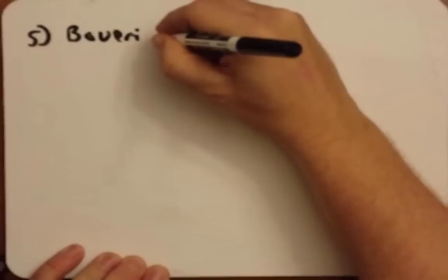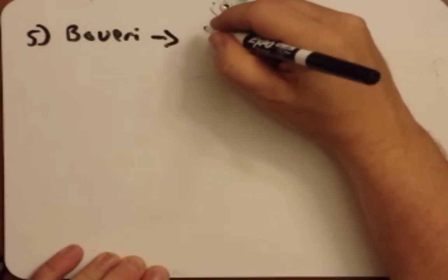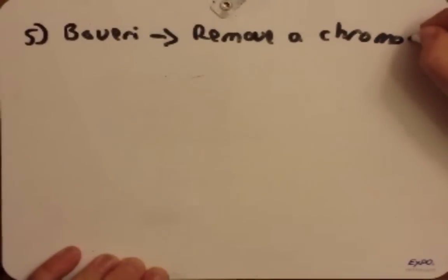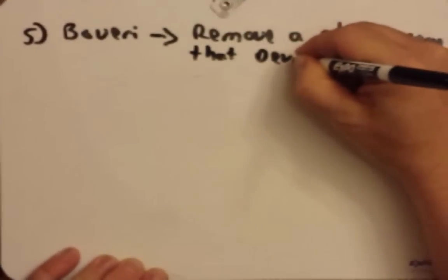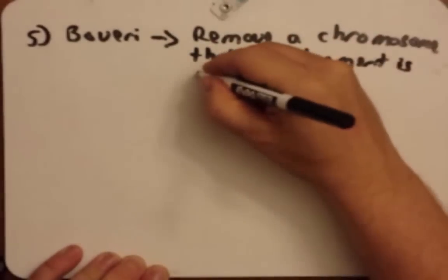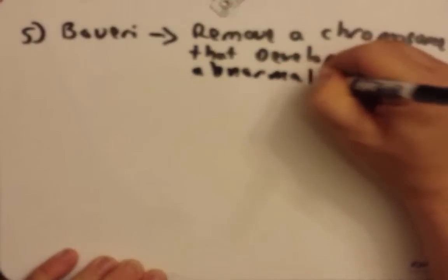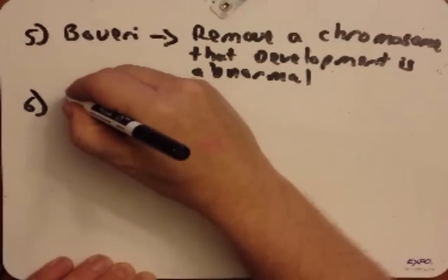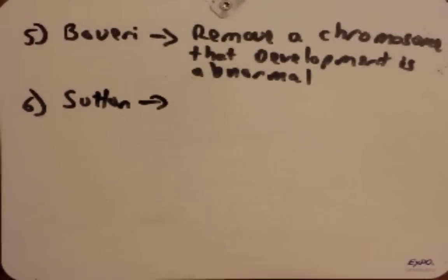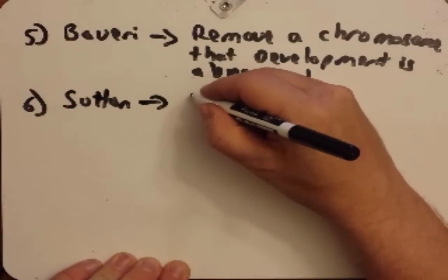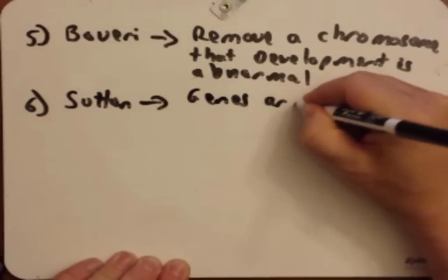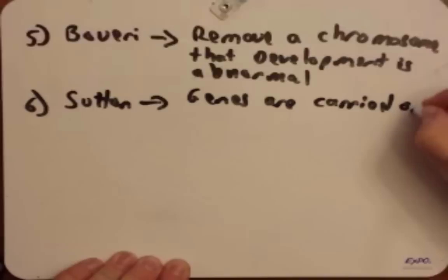The next person is Boveri. What Boveri did was he studied sea urchins, and in his studies he learned that if you remove a chromosome, development is abnormal. To us this sounds fairly reasonable, but at this time they didn't appreciate that the chromosomes contained the genetic material. The next person is Walter Sutton, and his key contribution is that Sutton was able to show that genes are carried on chromosomes.